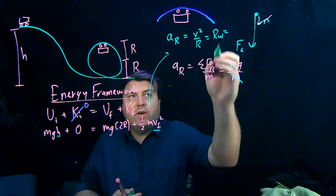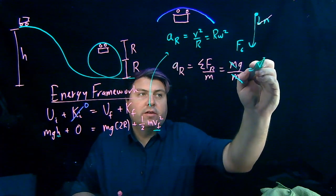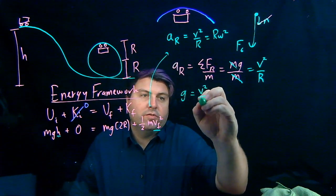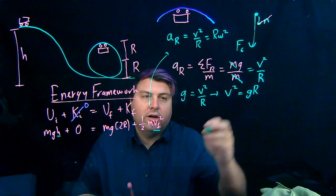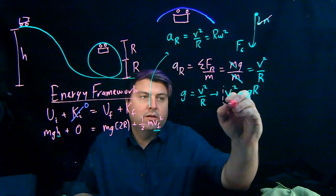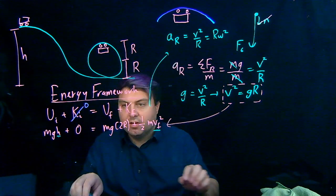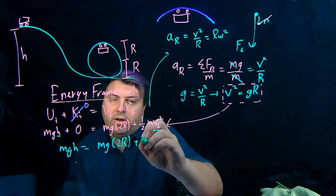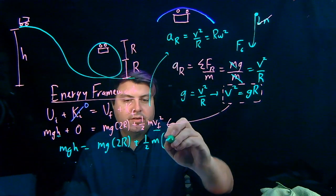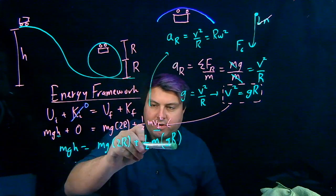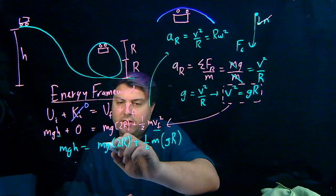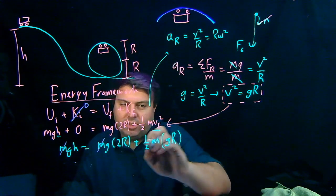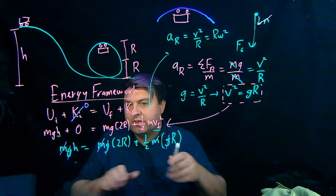Now we can substitute v squared equals gr back into the energy equation. We have mgh equals mg(2r) plus one-half m times gr. Looking at this equation, we have m in every term so we can cancel it, and similarly g appears in every term so we can cancel that too.